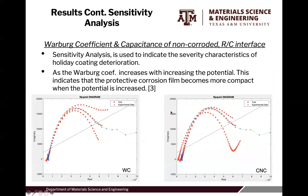The Warburg coefficient and capacitance of the non-corroded RC interface were used in a sensitivity analysis to indicate the severity characteristics of the holiday and coating deterioration. As the Warburg coefficient increases with increasing potential, this indicates that the protective corrosion film becomes more compact. As simulated using the TLM, as we increased the potential, we had a more protective corrosion film. The same can be said for both plots — as we increased them, we had a better, more compact corrosion film, which prevented the diffusion of corrosive species through the passive layer into our substrate.